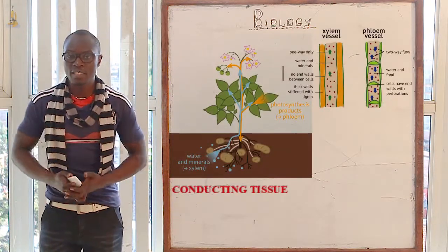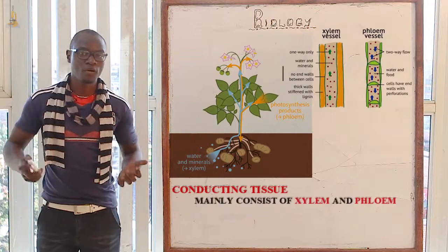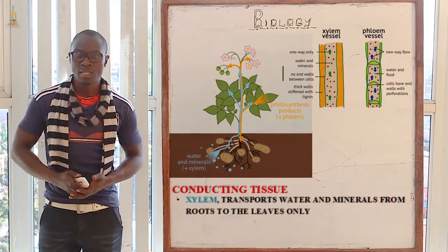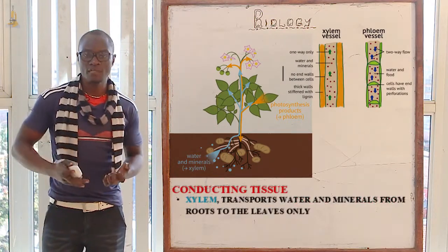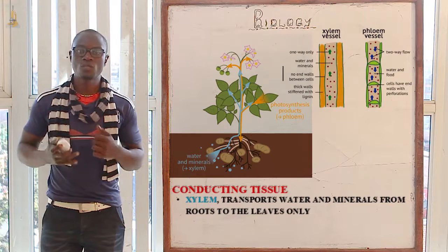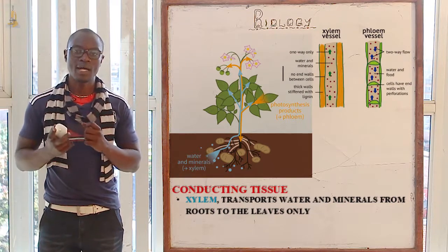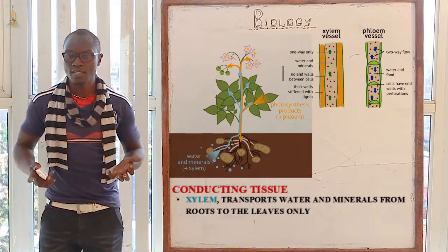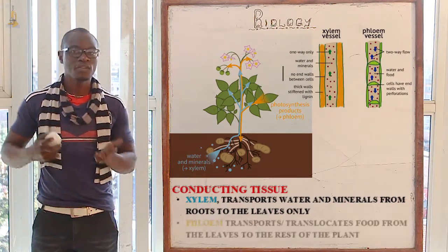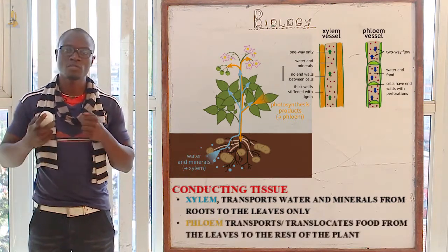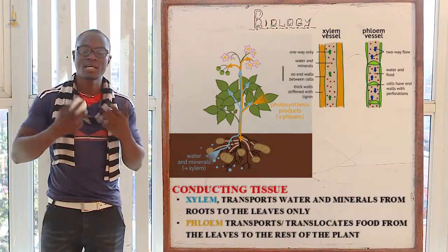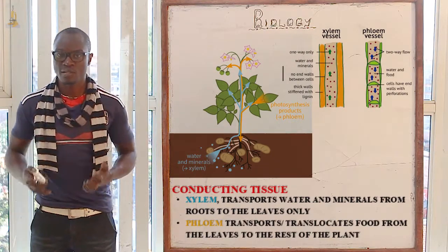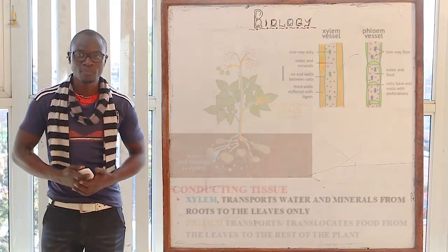The next tissue we have is the conducting tissue, which mainly comprises the xylem vessels and the phloem vessels. The function of the xylem vessels is to transport water and mineral salts through the plant, while the function of the phloem is for the translocation of dissolved food substances within the plant.